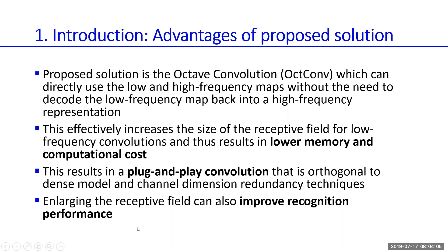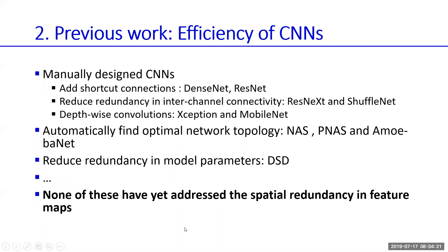The proposed convolution is plug-and-play into any convolutional neural network, which is really nice. Also, by enlarging the receptive field, it can improve recognition performance. Many topologies have been developed before — shortcut connections, depthwise convolutions — but spatial redundancy has never been addressed in previous architectures, so it's quite interesting to explore.